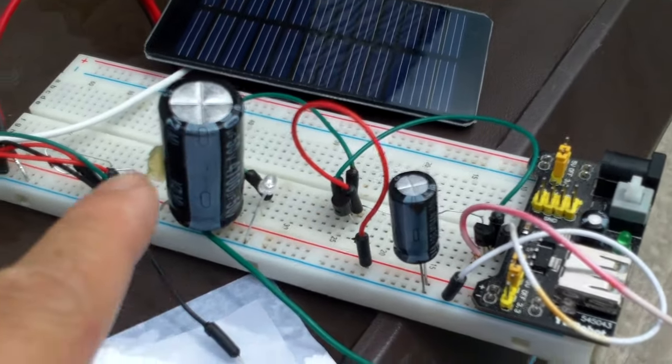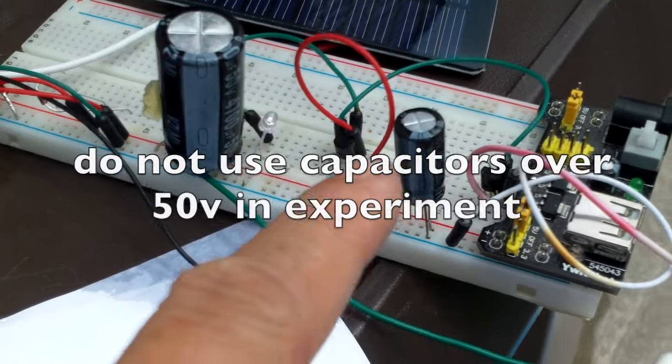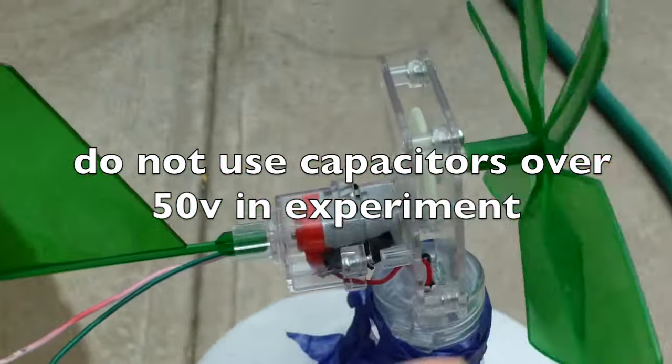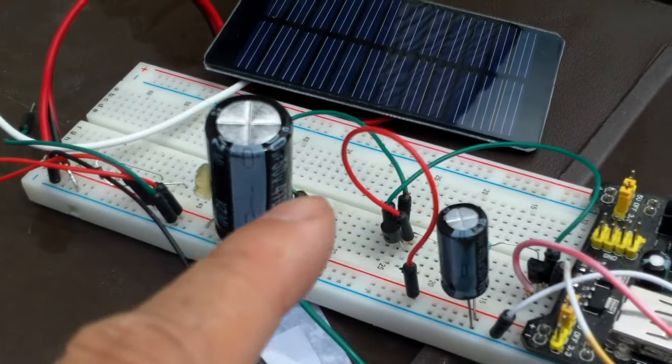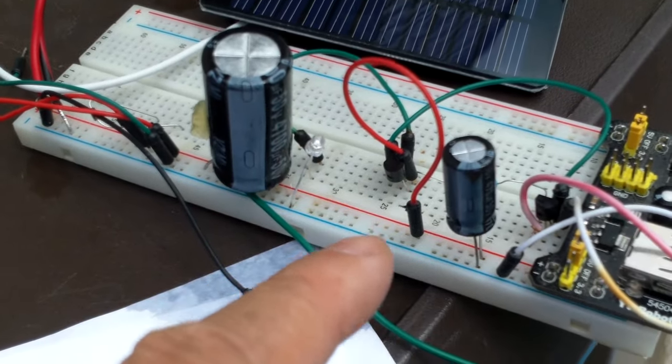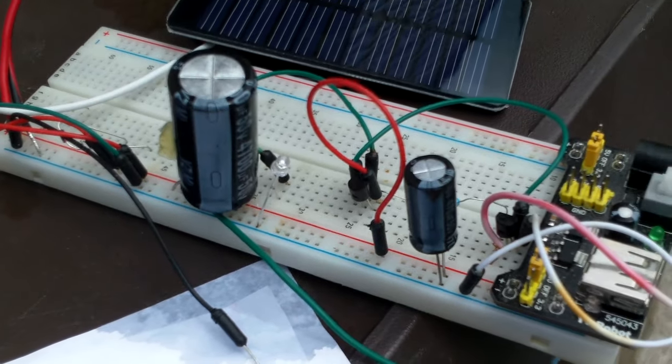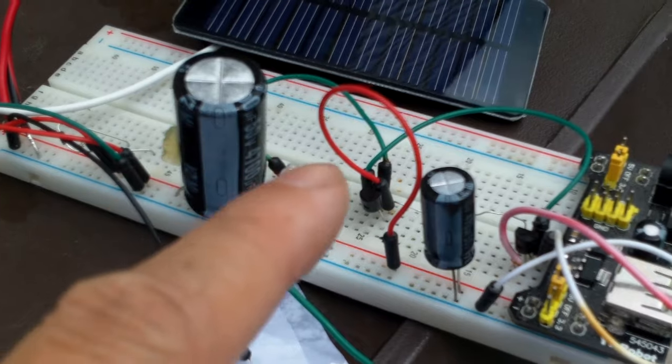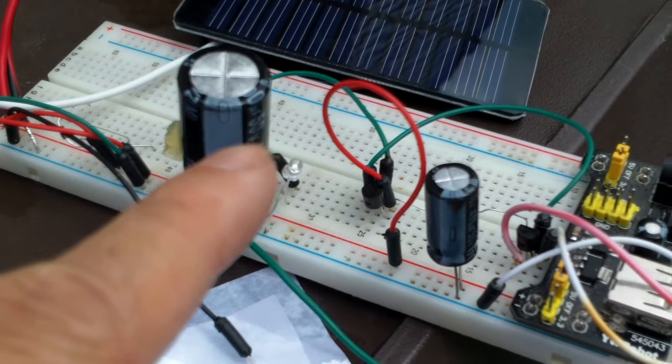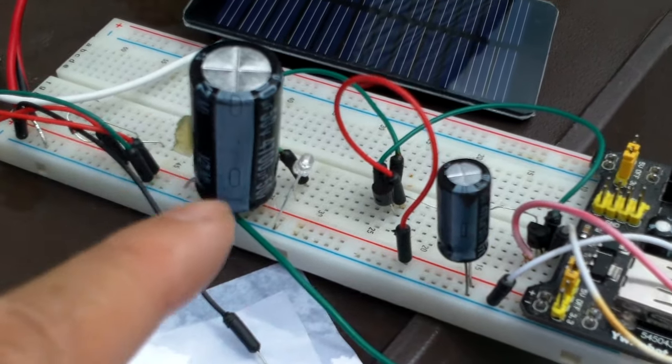What it does is it will charge up the capacitors, then the windmill will start turning. Because the solar panel is so small, ordinarily it wouldn't make that windmill turn, so the transistors control the upper and lower limit of the charging and discharging.